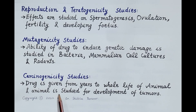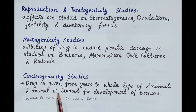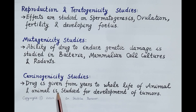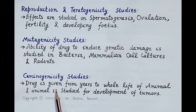Unsuitable drug candidates are rejected at each step. By the end of preclinical studies, almost all molecules are rejected except the best five, which are further evaluated during clinical trials. If you find the video useful, kindly like, subscribe, and share. Thanks for watching.